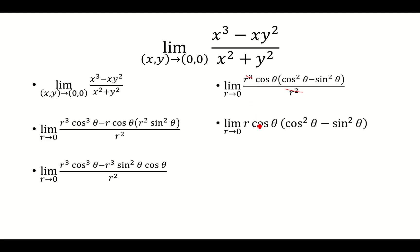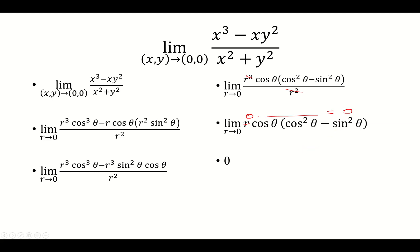So that's r cosine theta times cosine squared minus sine squared. If I plug in r equals 0, I'm left with 0 times the rest, which we know 0 times anything is 0. So we say that our limit is equal to 0.